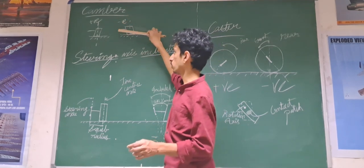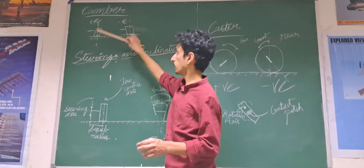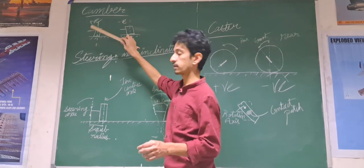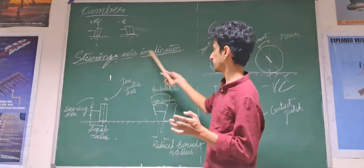Negative camber gives us more control, but there is more tire wear. While positive camber reduces tire wear. We will see how that affects in steering axis inclination.